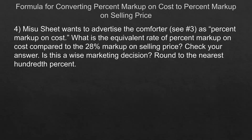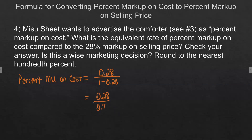Continuing with the Mizu Sheet problems — there are about three problems in the book that go together. Mizu wants to advertise the comforter as a percent markup on cost. We had 28% markup on selling price in the previous question. What is the equivalent percent markup on cost? To find it, we take the percent markup on selling price (0.28) and divide by 1 minus that percent (0.72), giving us 38.89%.